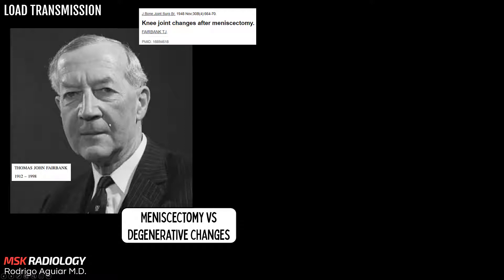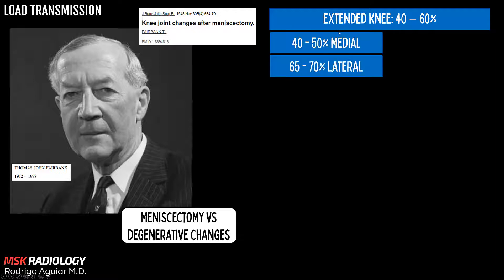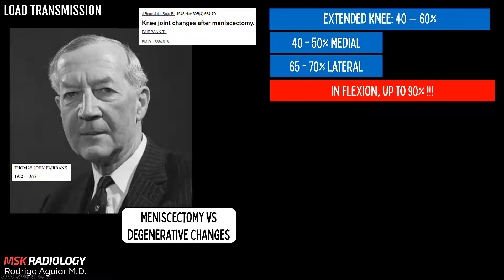Approximately 40% to 60% of the load acting on the extended knee joint is transmitted to the meniscus — 40% to 50% on the medial meniscus and 65% to 70% on the lateral meniscus. And in flexion, these numbers increase up to 90%.